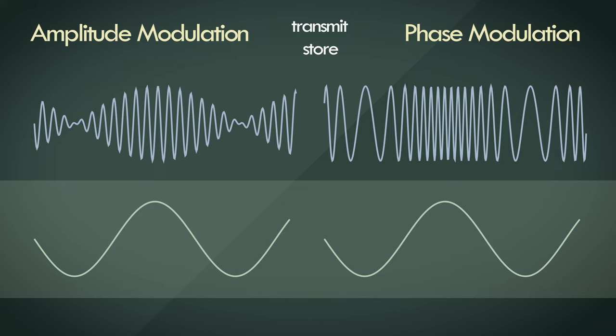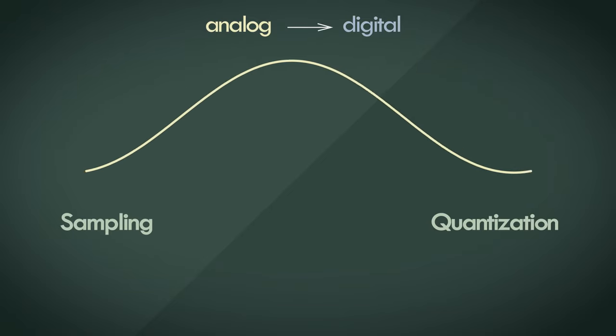Frequency modulation, as mentioned before, applies to continuous analog signals. For the transmission and storage of discrete digital signals, we need a different approach. Let's take this sinusoid, for instance, in its analog form. To begin the process of transformation from analog to digital, we need the prerequisites, sampling and quantization.